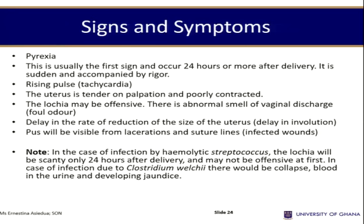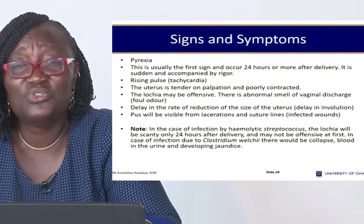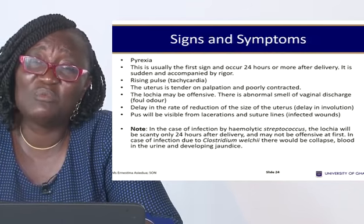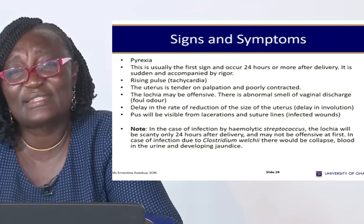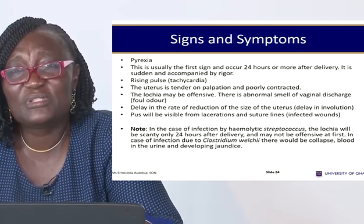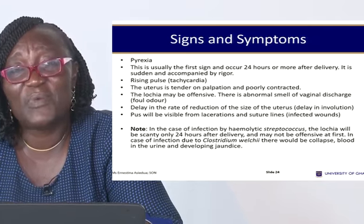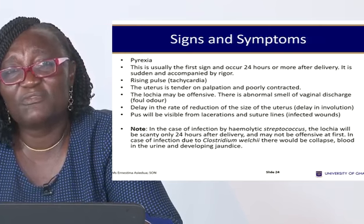Signs and symptoms of puerperal sepsis include pyrexia as the very first sign, rising pulse or tachycardia, and a uterus that becomes tender on palpation because infection prevents normal contraction. The lochia may be offensive. There is a delay in the rate of uterine involution — the uterus remains high because the autolysis process that breaks down excess uterine muscle is disrupted by infection. Pus may be visible from lacerations and suture lines.